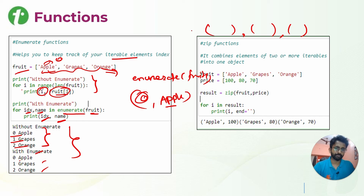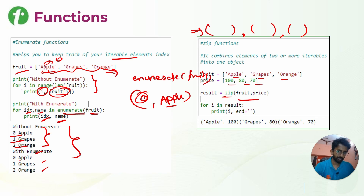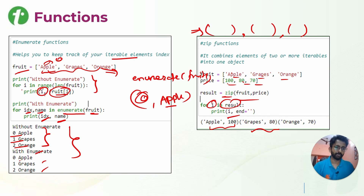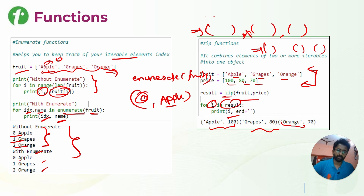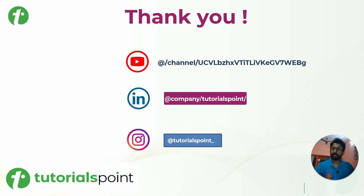The zip function zips two different lists into comma-separated tuples. For example, a list of fruits: apple, grapes, orange, and a list of prices: 100, 80, 70. Doing zip(fruits, prices) and iterating with for i in results and printing i gives: apple 100 together, grapes 80 together, and orange 70 together. That is how the zip function combines two lists.